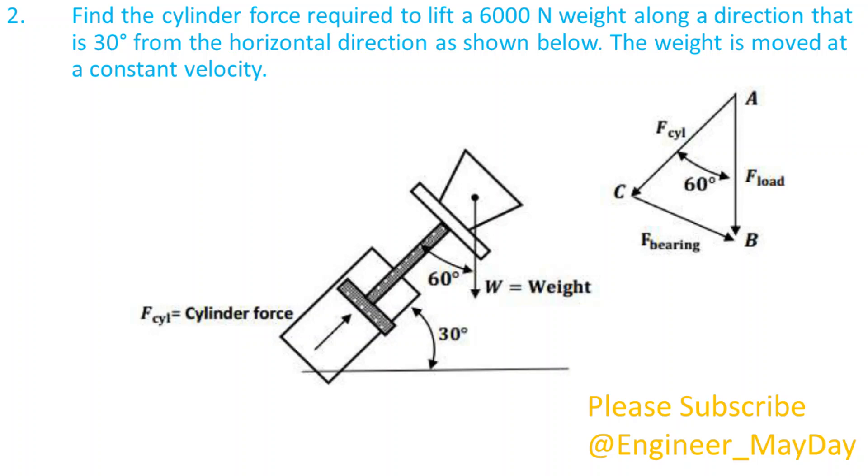Find the cylinder force required to lift a 6000 newtons weight along a direction that is 30 degrees from the horizontal direction as shown below. The weight is moved at a constant velocity.